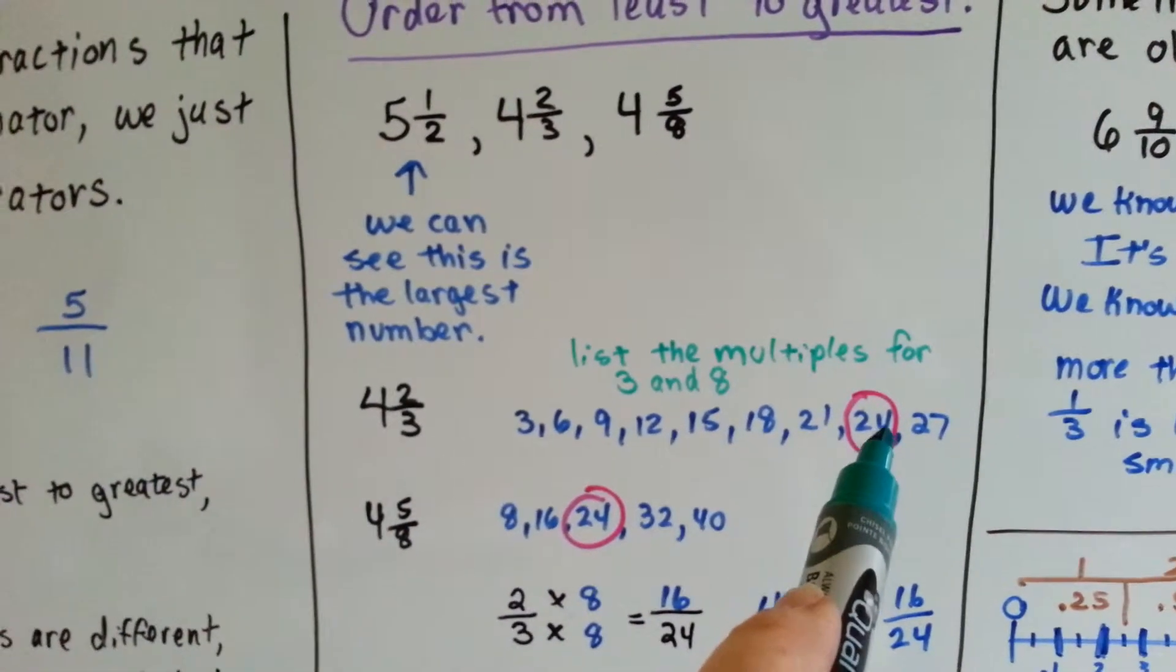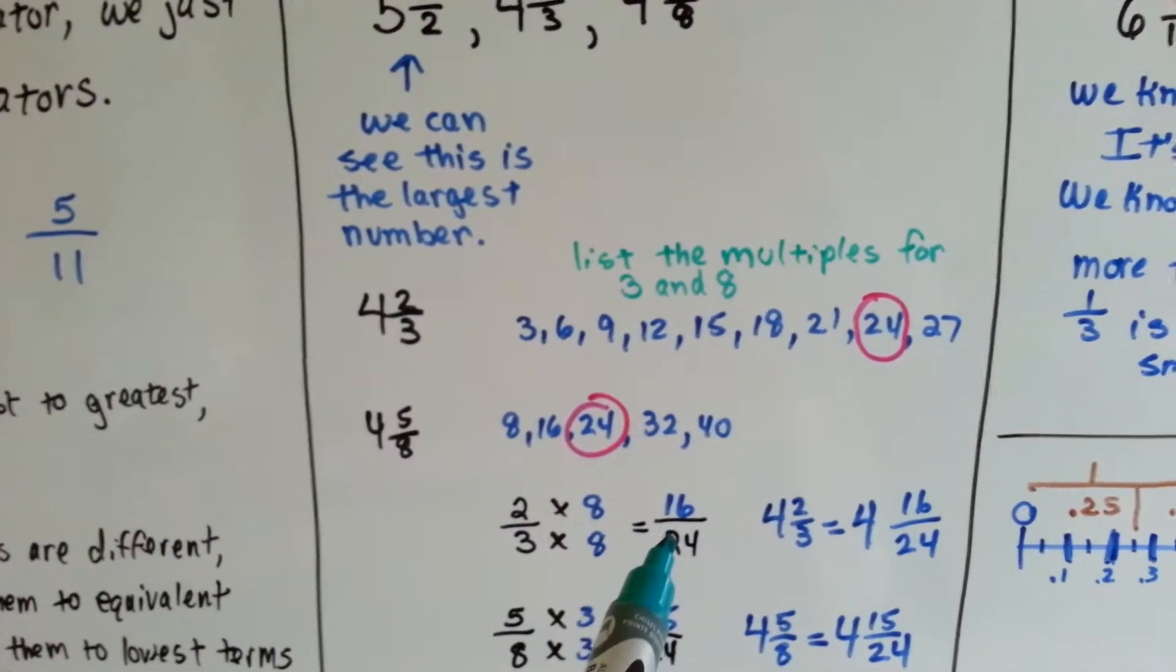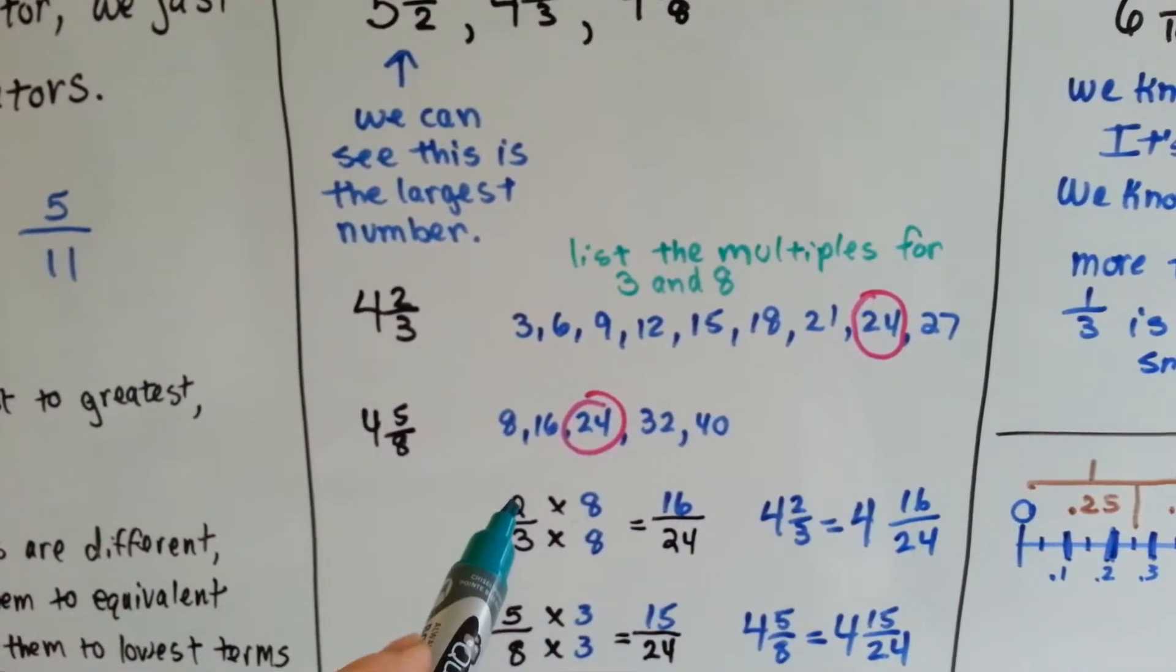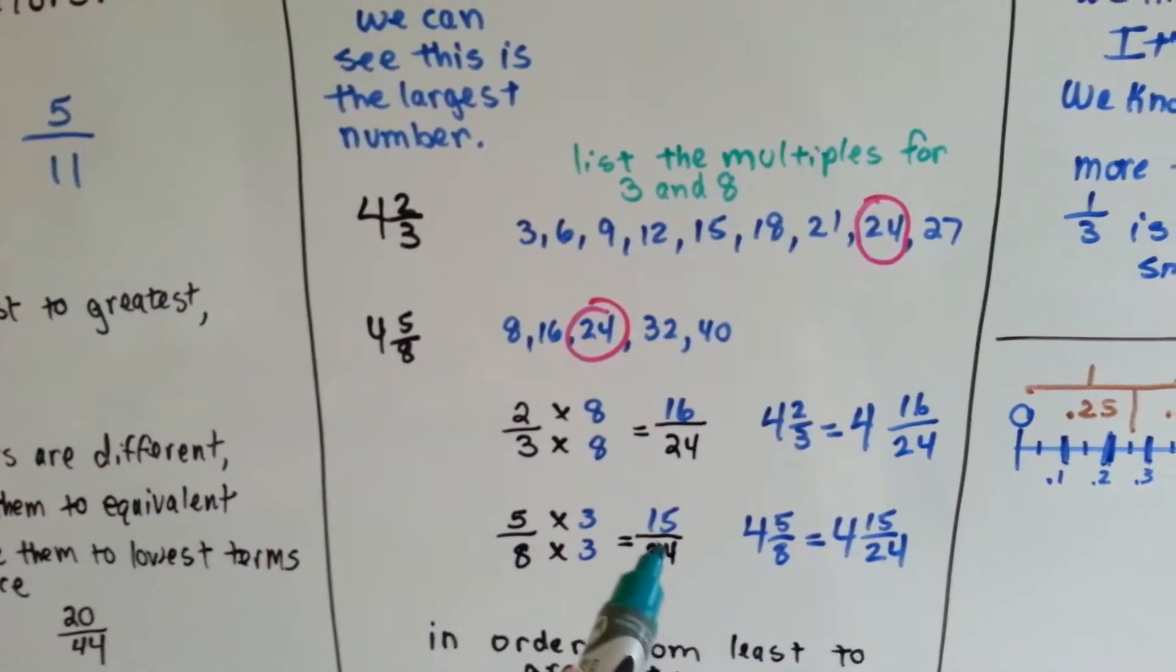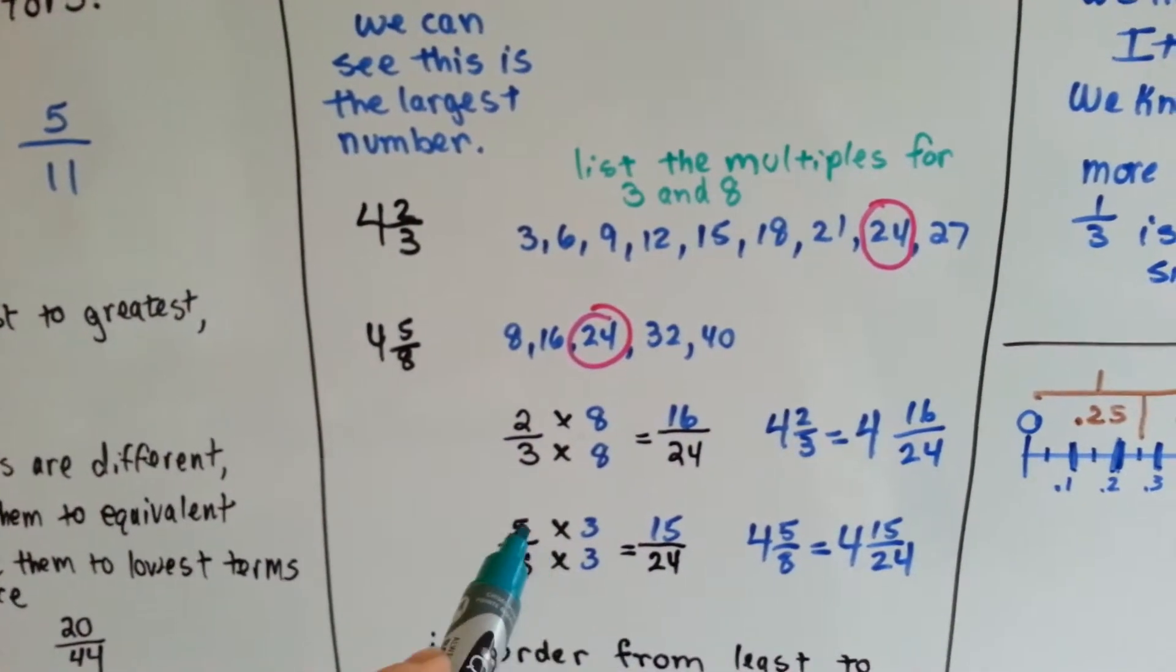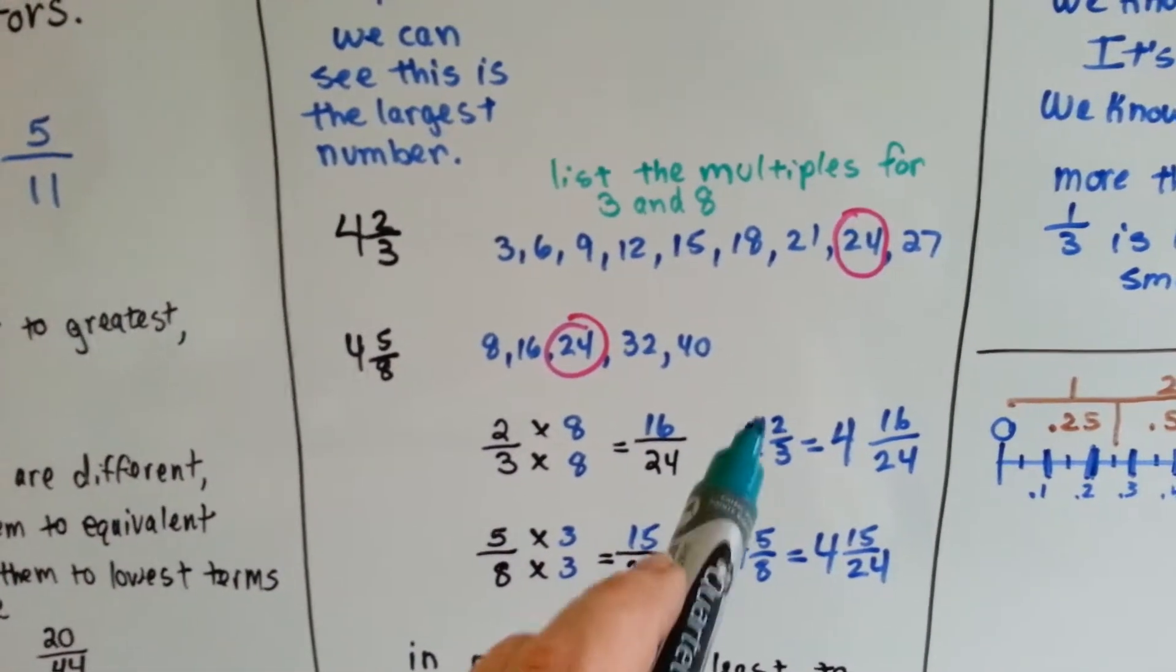They can meet at 24's house. What does 3 need to become 24? It needs to be multiplied by 8. 2 gets jealous, it gets multiplied by 8 and becomes a 16. What does 8 need to become 24? It needs to be multiplied by 3, and 5 gets jealous and it becomes a 15. Now, we put the whole numbers back on.